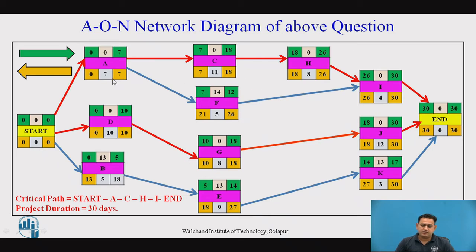Now let us calculate the forward path — that is EST and EFT for each individual activity. The starting activity has EST of 0, and EFT equals 0 plus 0 equals 0. This EFT becomes the EST of activities A, D, and B, which are all 0. So EFT of A is 0 plus 7 equals 7, EFT of D is 0 plus 10 equals 10, and EFT of B is 0 plus 5 equals 5.